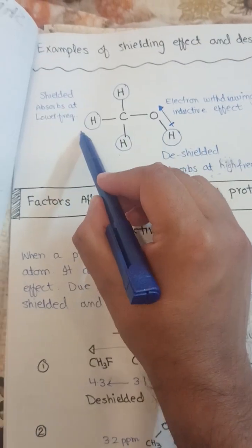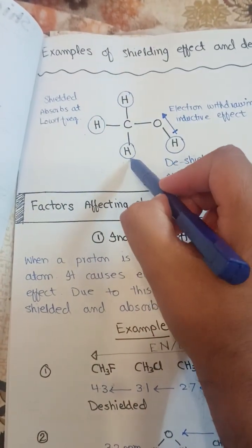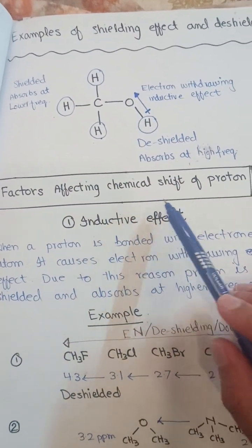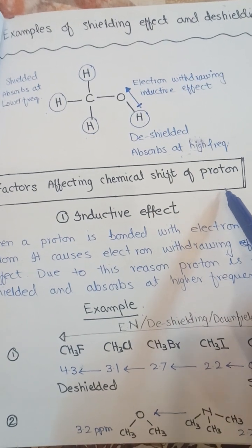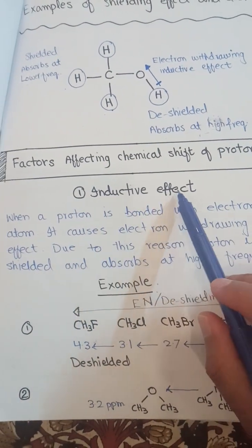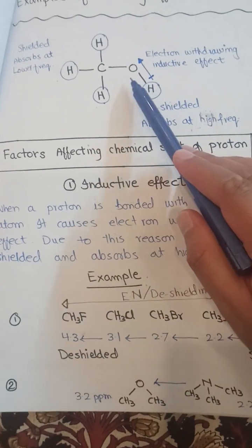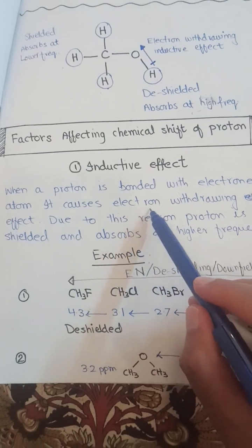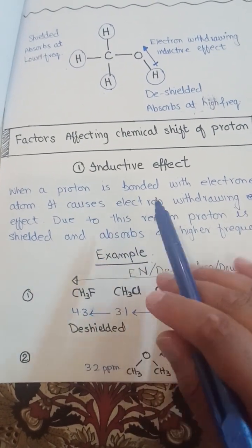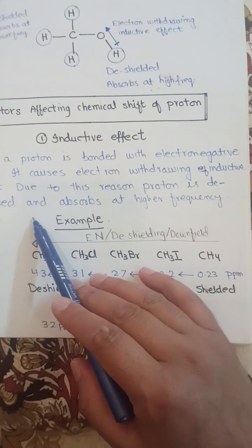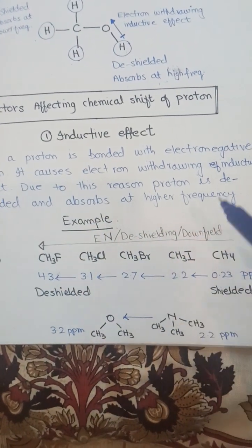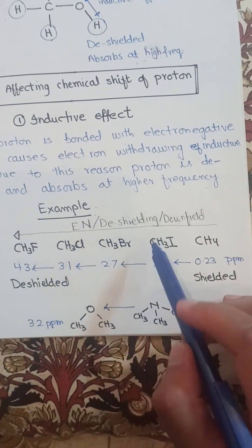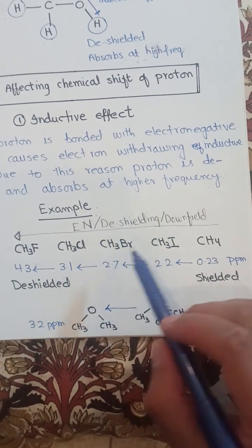While in the case of shielded protons, they will absorb at lower frequency and their peaks will be upfield. Now we are going to discuss other factors that affect chemical shift of the proton. We already discussed the inductive effect because of oxygen. When a proton is bonded with an electronegative atom, it causes electron withdrawing inductive effect, and due to this, the proton is deshielded and absorbs at higher frequency. Now we are going to take another example where electronegative atoms are attached with a methyl group.